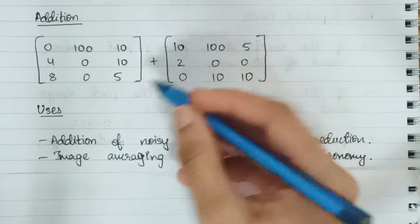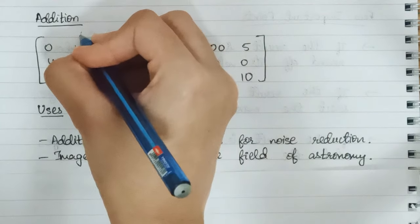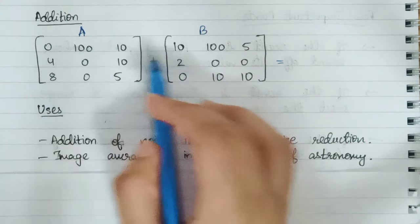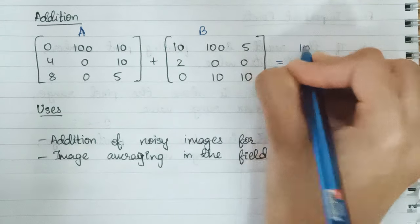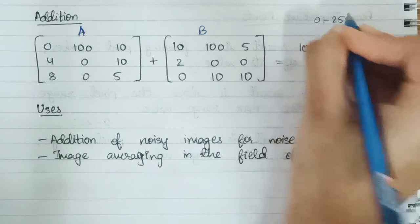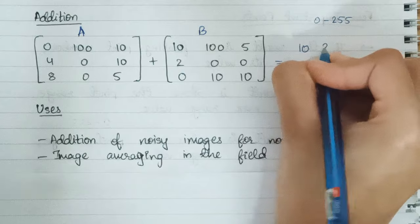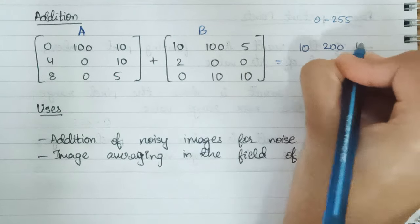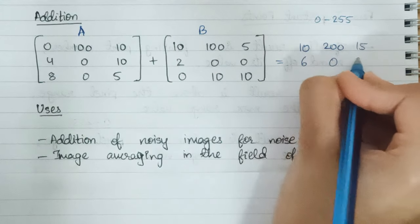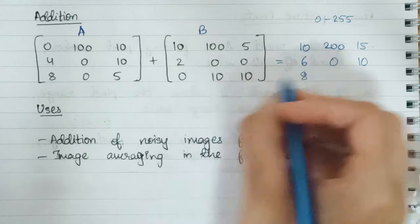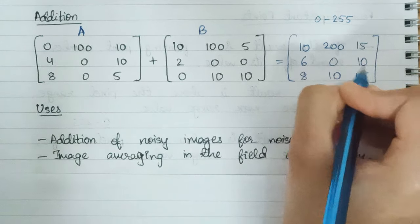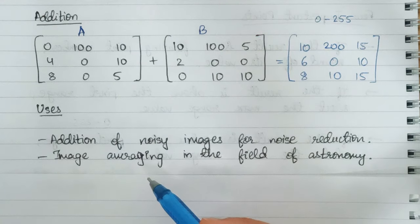The first operation is addition. We have two images — two matrices A and B. We do simple pixel addition: 0 plus 10 is 10, 100 plus 100 is 200 which is within the range of 0 to 255. Continuing: 10 plus 5 is 15, 4 plus 2 is 6, 0 plus 0 is 0, 10 plus 0 is 10, 8 plus 0 is 8, and 10 plus 15. That was the simple addition between these two images.